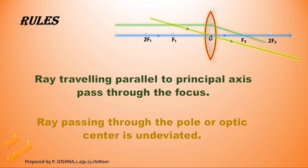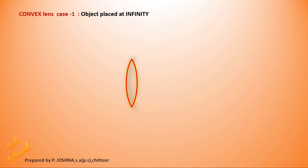With these two rules you are going to draw all varieties of ray diagrams for a convex lens. So be ready with a pen and color pencils — you are going to draw now.